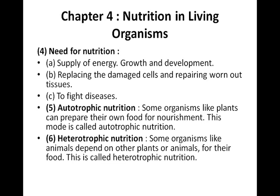The sixth topic is heterotrophic nutrition. What is heterotrophic nutrition? Some organisms, like animals, depend on other plants or animals for their food. This is called heterotrophic nutrition. Like us — we are dependent on the growth of plants and on animals for our nutrition — so we come under heterotrophic nutrition.